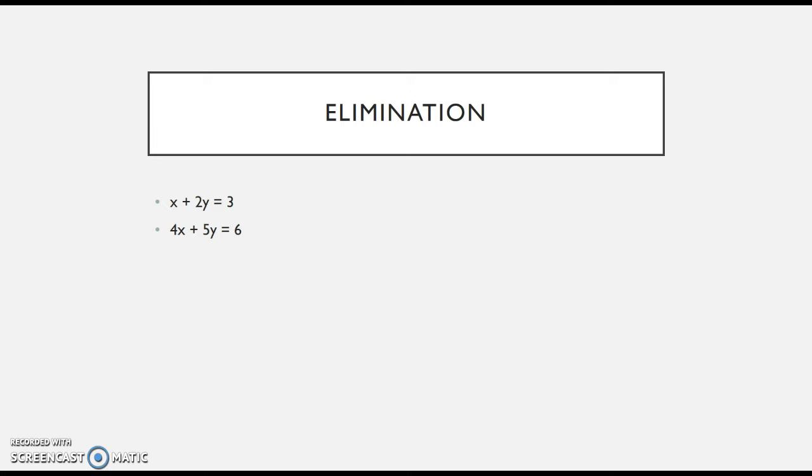Now I'll solve the same system with elimination. With elimination, the goal is to completely eliminate one variable by adding the equations. I need to get one of my variables to cancel out. To cancel, a 1 would need a negative 1, a 2 would need a negative 2, and 5 would need a negative 5. Nothing cancels right now, but I can easily take 1 and get 4.